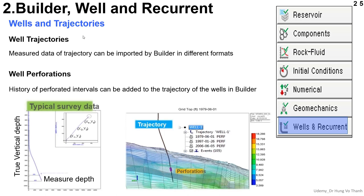Now we go back to the Well and Recurrent. Firstly, for Well Trajectory, the measured data of trajectory can be imported directly by the Builder in different formats. So if you have this data from Petrel software, the way you just export from Petrel and you can import to CMG is very convenient for you.